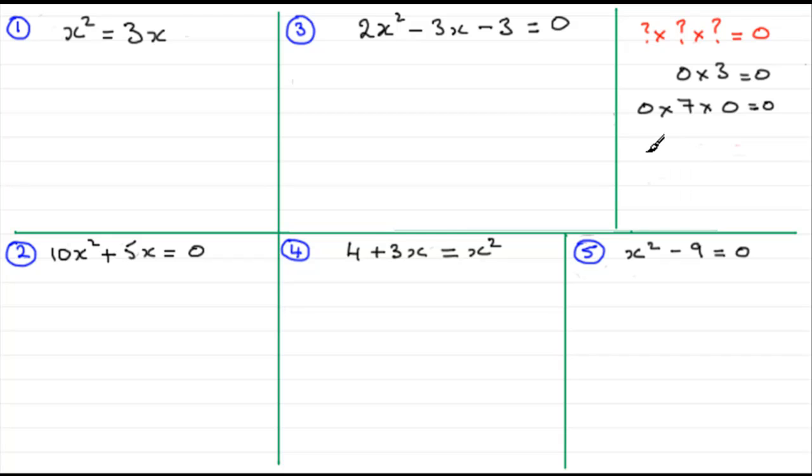So what I'm saying is that if you have one or more factors, one or more factors must equal zero if you're multiplying them together and they equal zero.